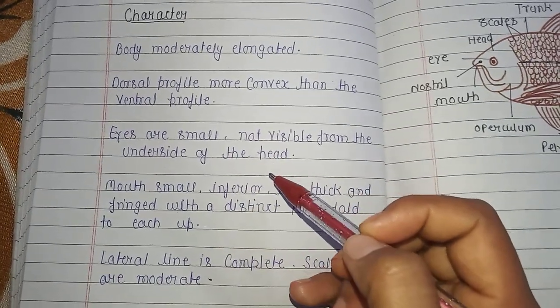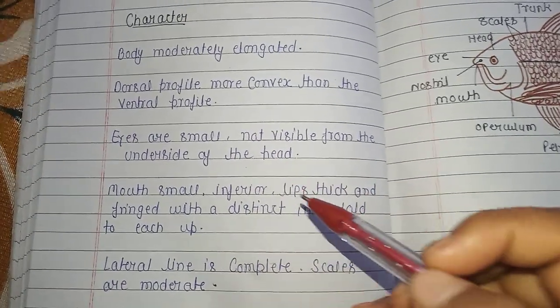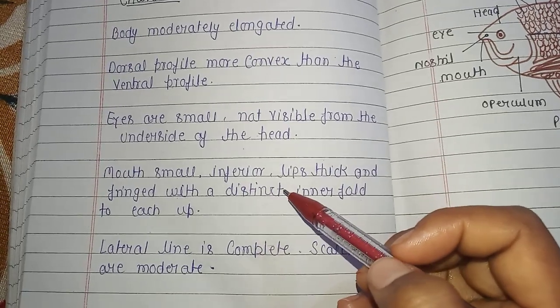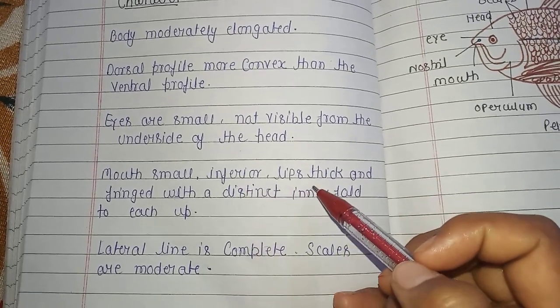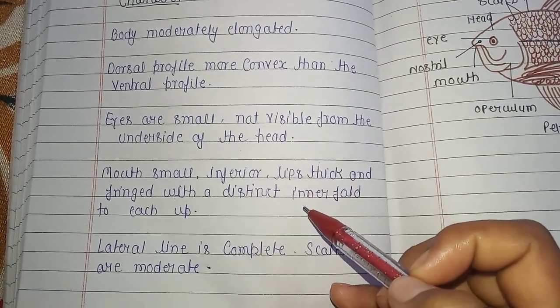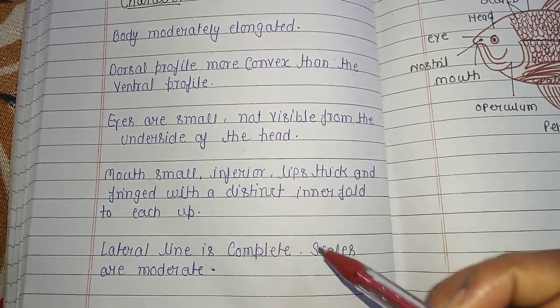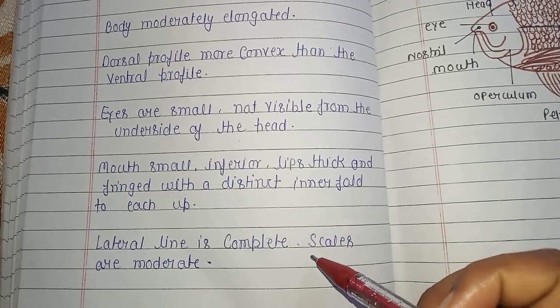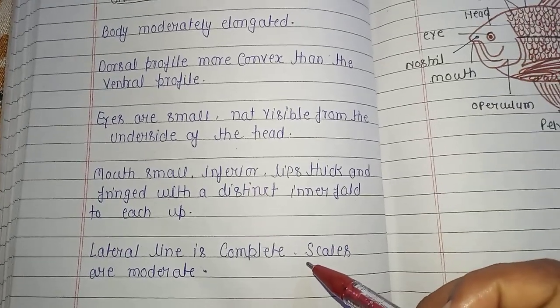The eyes are not visible on the underside of the head. The mouth is small, lips are thick and fringed with a distinct inner lobe to each. The lateral line is complete and scales are moderate in size.